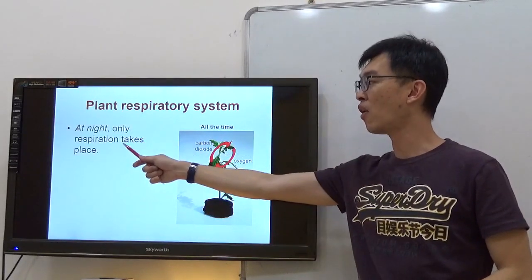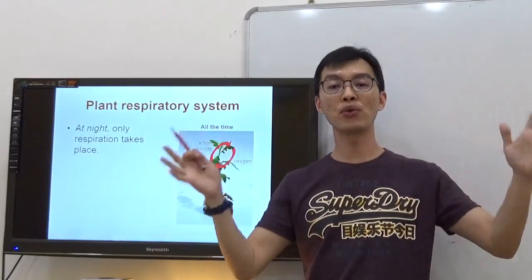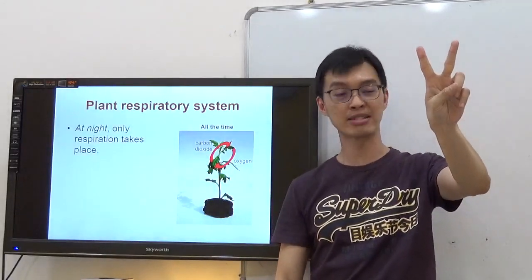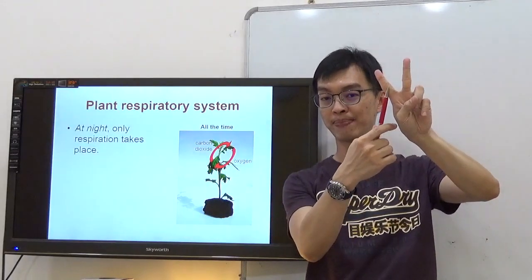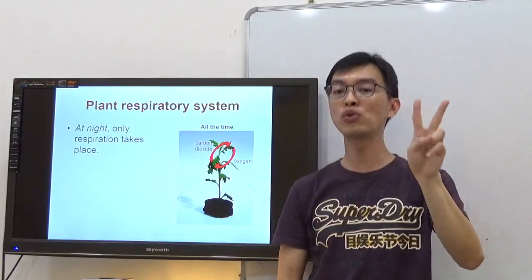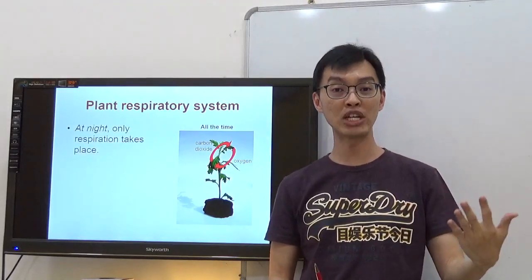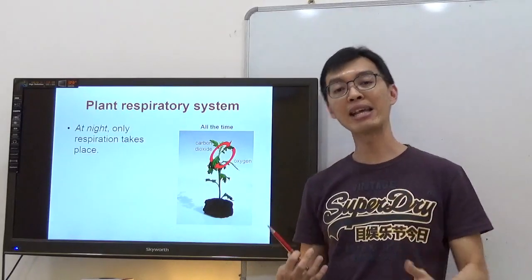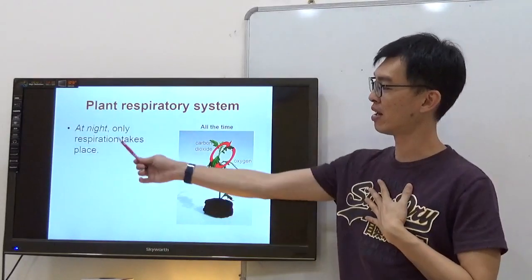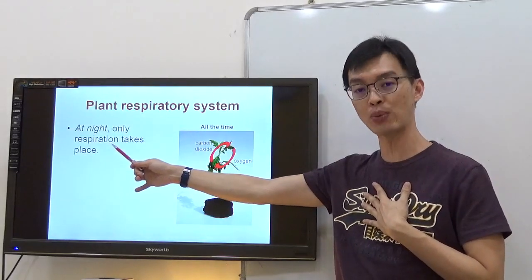So at night, only respiration takes place. Remember this: during the day, two things are happening for the plant. Number one, respiration. Photosynthesis. So they will do two things in the day. Like us, they need to do respiration. But at night, they just do what we do. At night, we only do respiration. They also do respiration as well.